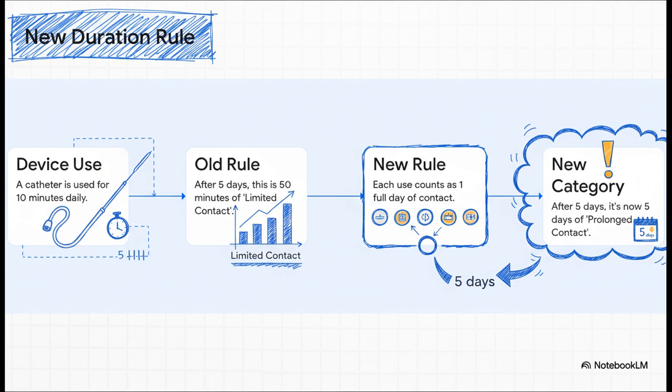But under the new rule, any contact within a 24-hour window, doesn't matter if it's one second or one hour, it counts as a full day. So that same device is now suddenly categorized as five days of prolonged contact, which can trigger a whole new world of evaluation requirements. It's a game changer.